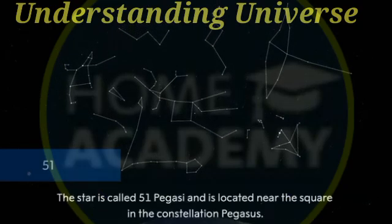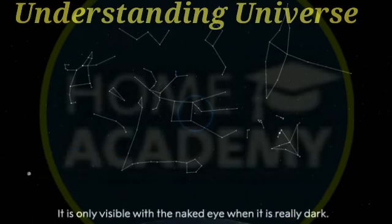The star is called 51 Pegasi and is located near the square in the constellation Pegasus. It is only visible with the naked eye when it is really dark.